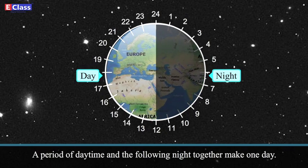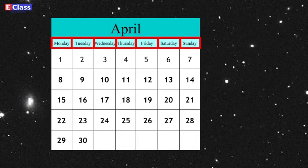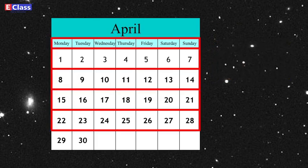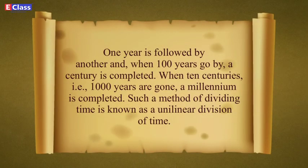A period of daytime and the following night together make one day. Seven days, Monday to Sunday, make one week. Two weeks make a fortnight. Four weeks make a month, and twelve months make a year. We reckon time in bigger and bigger units. One year follows another, and when a hundred years go by, a century is completed. When a thousand years are gone, a millennium is completed. This method of dividing time is known as a unilinear division of time.